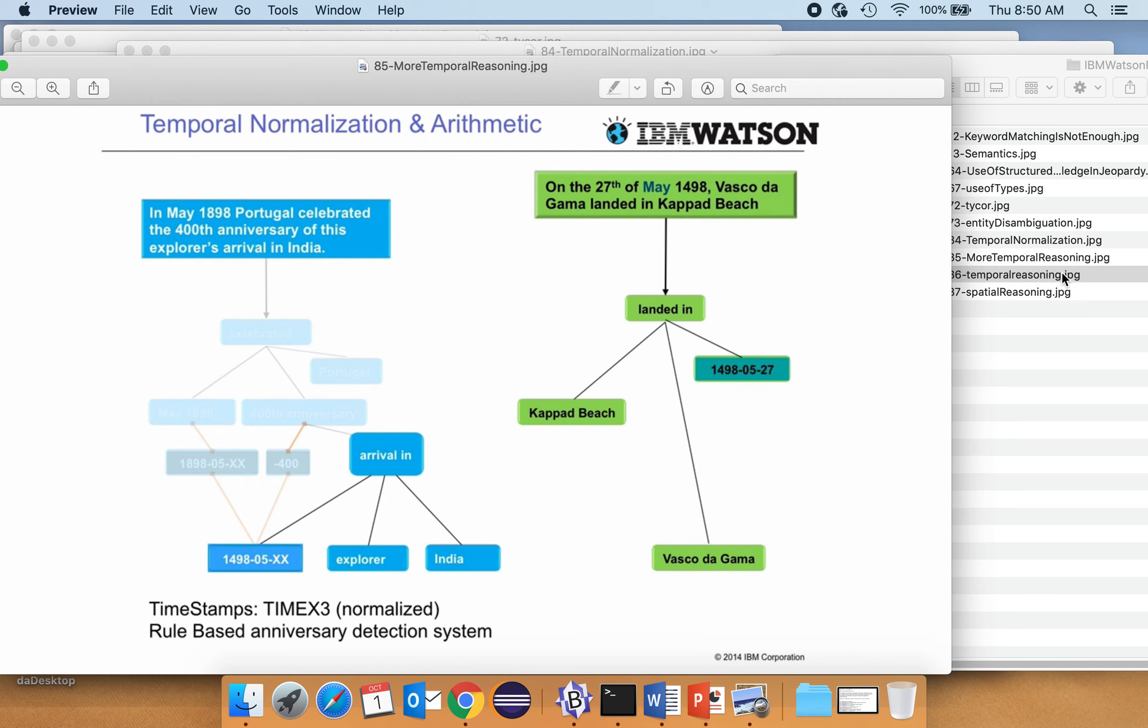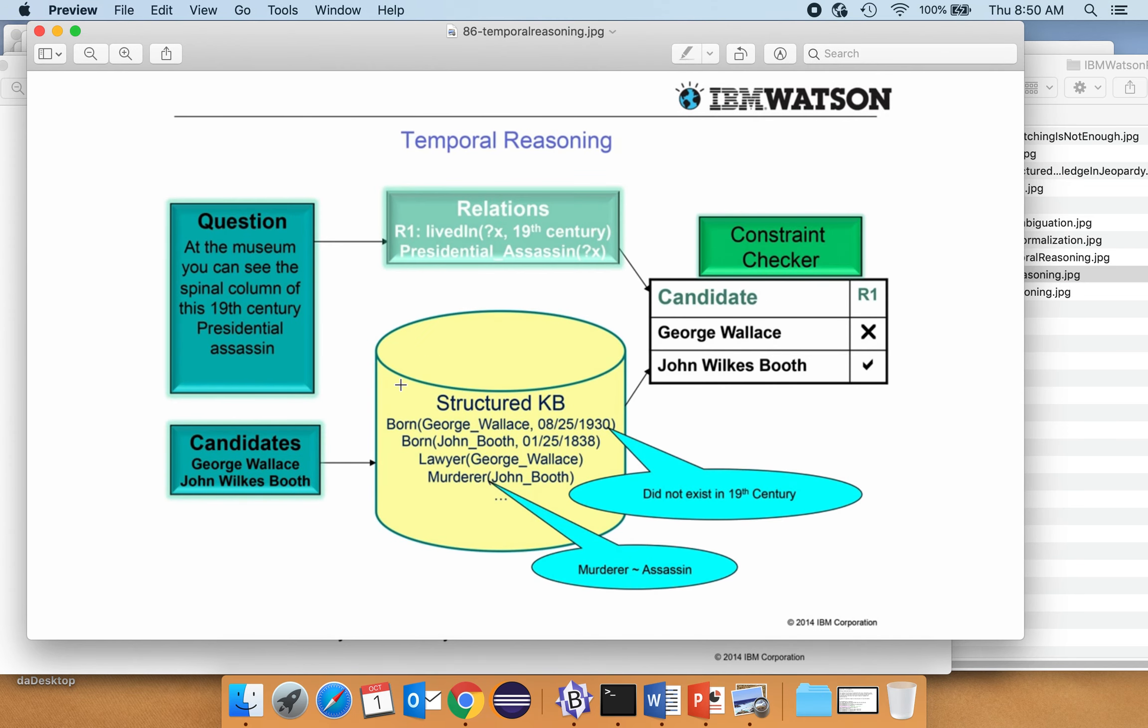Here's some additional temporal reasoning. So here's the question or the clue. At the museum, you can see the spinal column of this 19th century presidential assassin. And so suppose we have two candidates, George Wallace and John Wilkes Booth. So then we kind of need to know that there's a 19th century presidential assassin, right? So somebody must have lived in the 19th century. So if we look at George Wallace and we find out that, oh, wait a minute, they were born in 1930. Well, clearly they didn't exist in the 19th century.